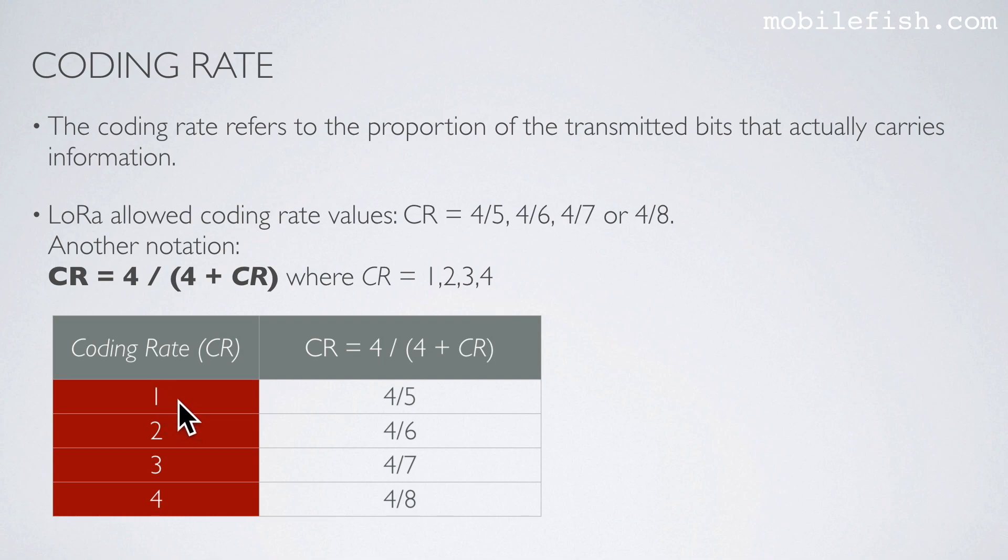So if we say the coding rate is 1, we mean the coding rate is 4/5. If we say the coding rate is 2, we mean the coding rate is 4/6, etc.